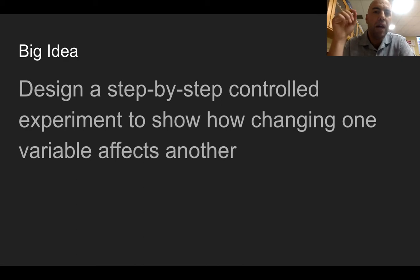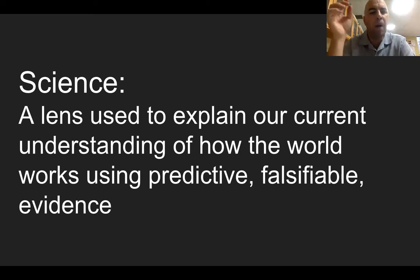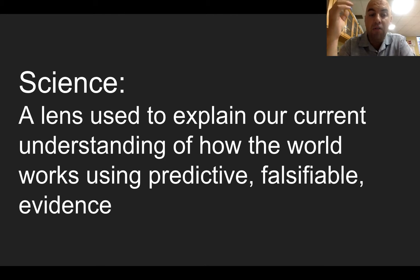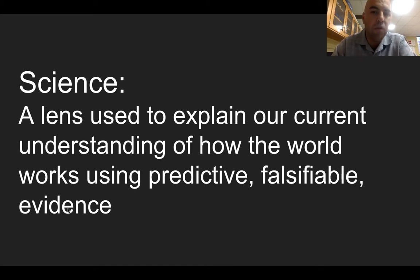The big idea is that we're learning how to design a step-by-step controlled experiment to show how changing one variable affects another. We've talked about science as a lens used to explain our current understanding of how the world works using predictive, falsifiable evidence. Today we're focusing on gathering that evidence in a way that is repeatable so others can follow it.